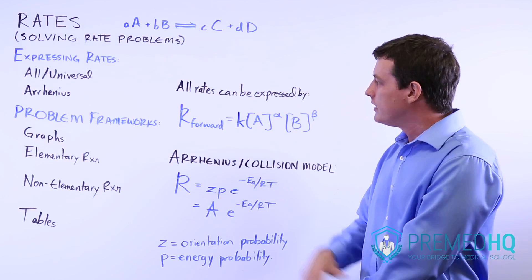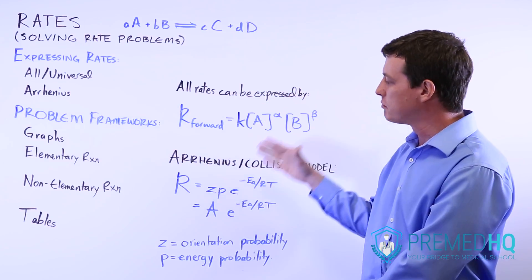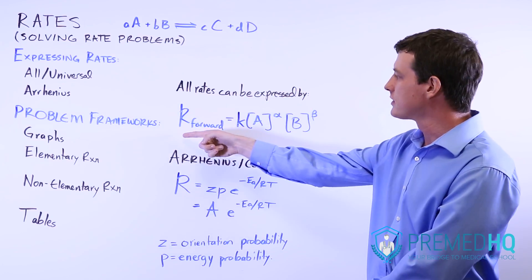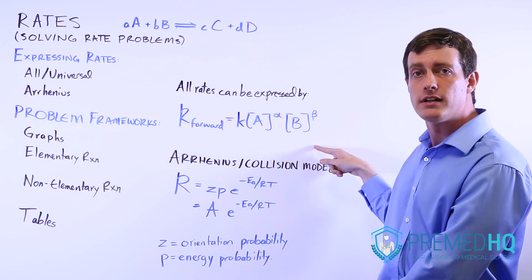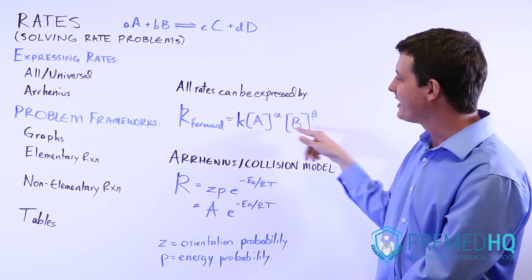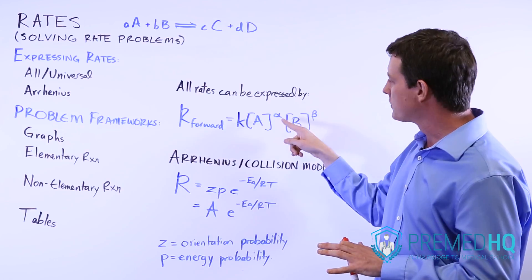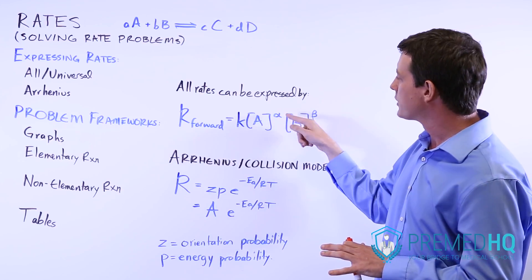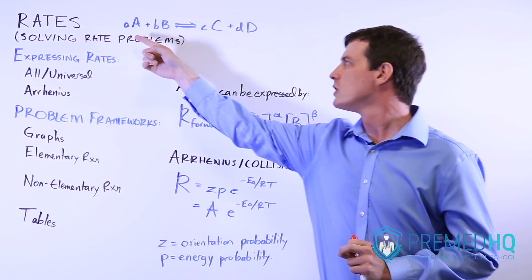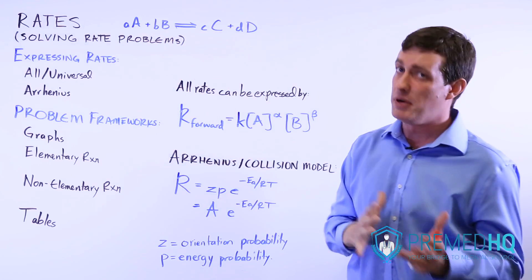These are the two ways you can express rates. You can either express them using this very common formula, remembering that the formula only cares about the reactants, not about the products, and also noting that the exponents don't always correspond with the stoichiometry, but they often do.